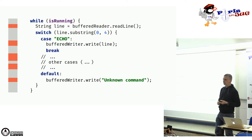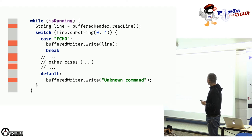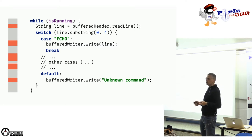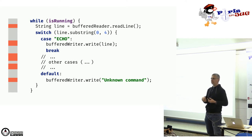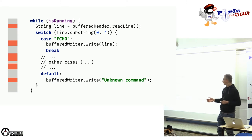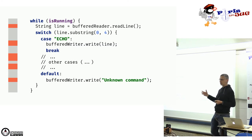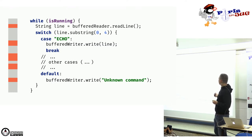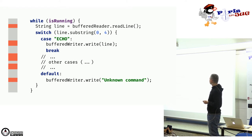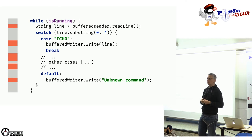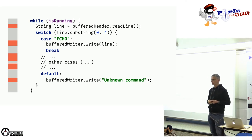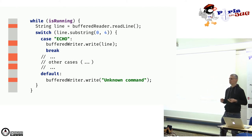Voici un code typique d'application bloquante qui lit du texte dans un BufferedReader et l'écrit dans un BufferedWriter. Les points rouges marquent les potentiels blocages : quand on lit des données et qu'aucune n'est disponible, le BufferedReader stoppe et suspend le thread courant jusqu'à ce que des données arrivent. De même, quand on écrit dans le BufferedWriter et que son buffer est plein, l'application bloque jusqu'à ce que le buffer se vide.